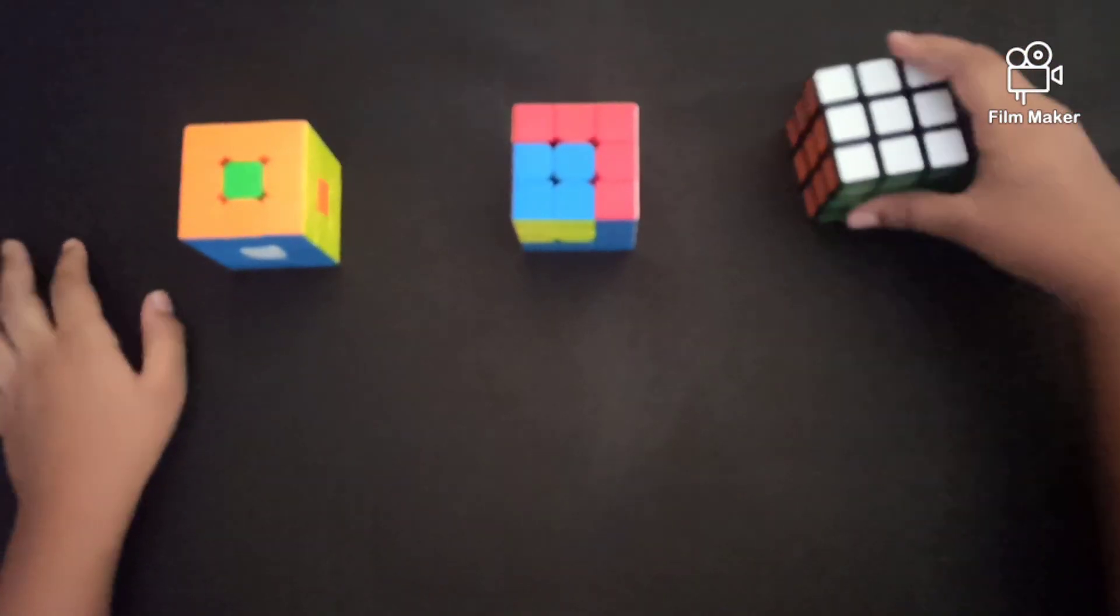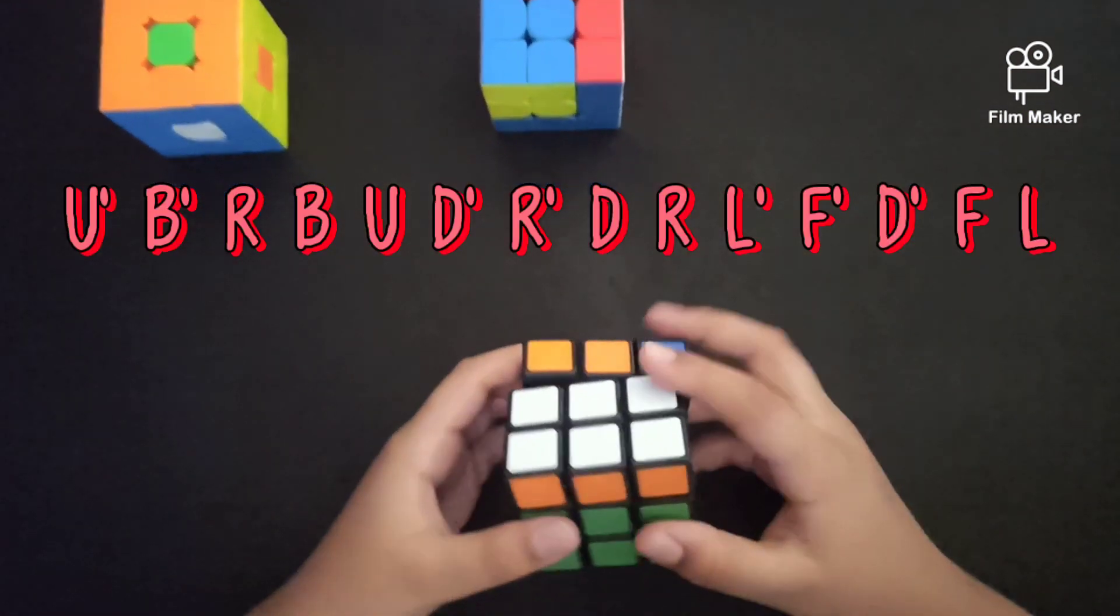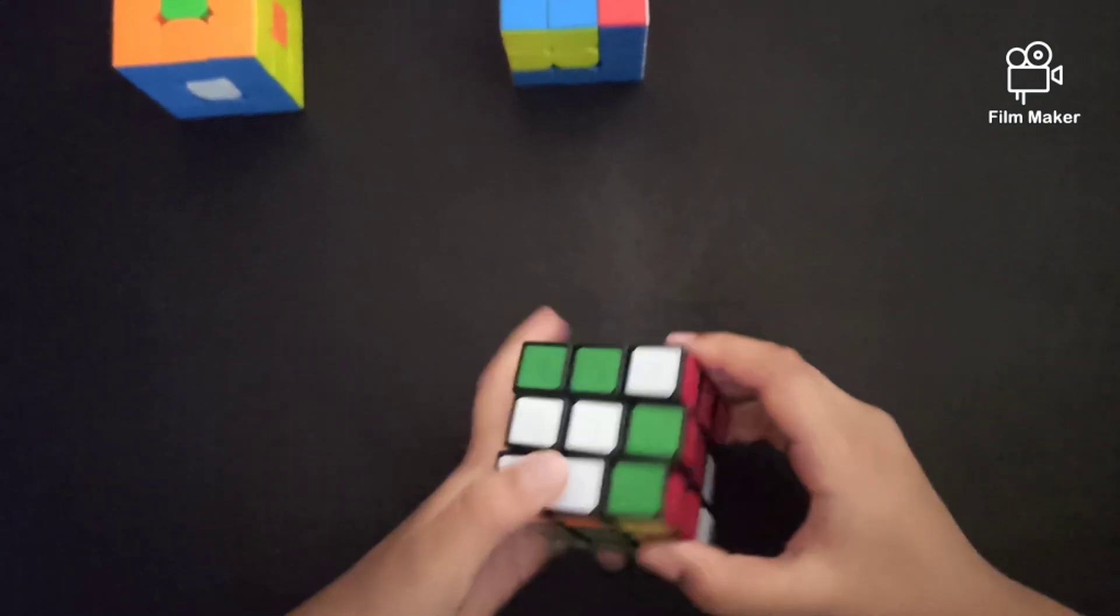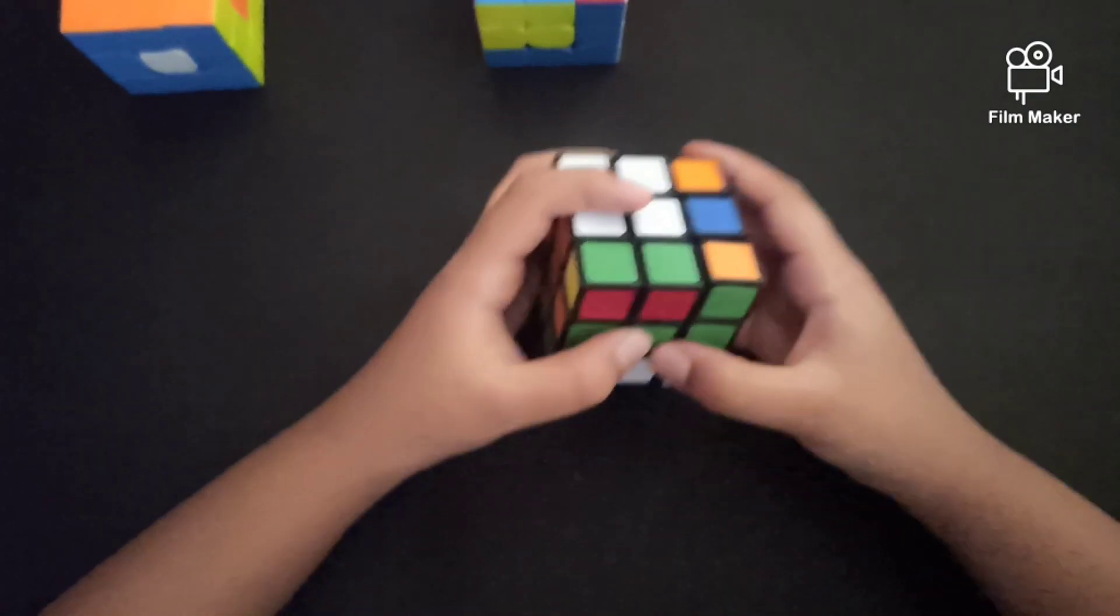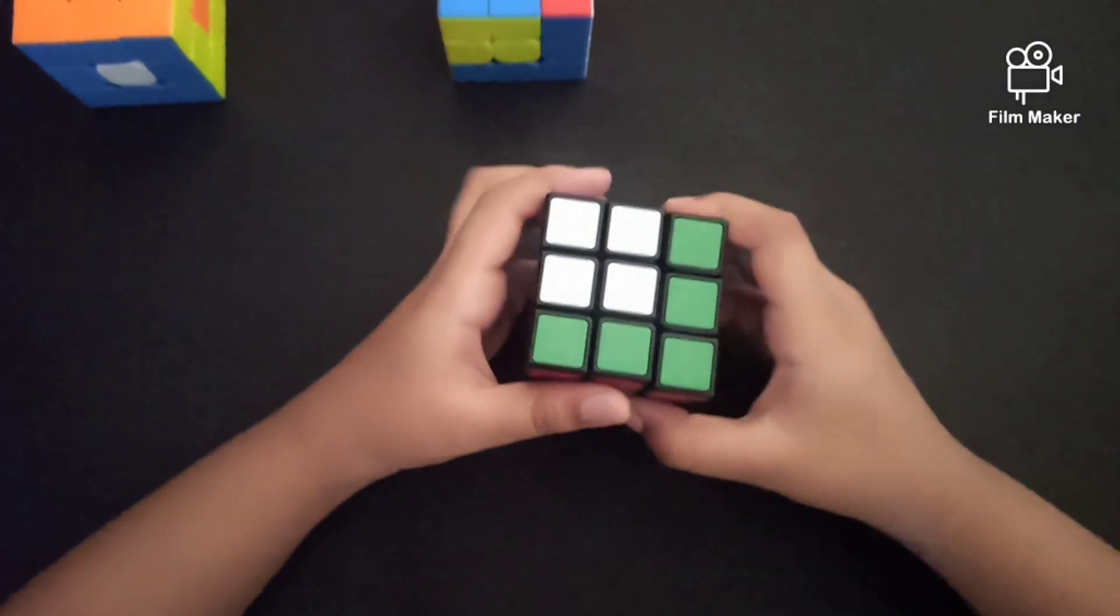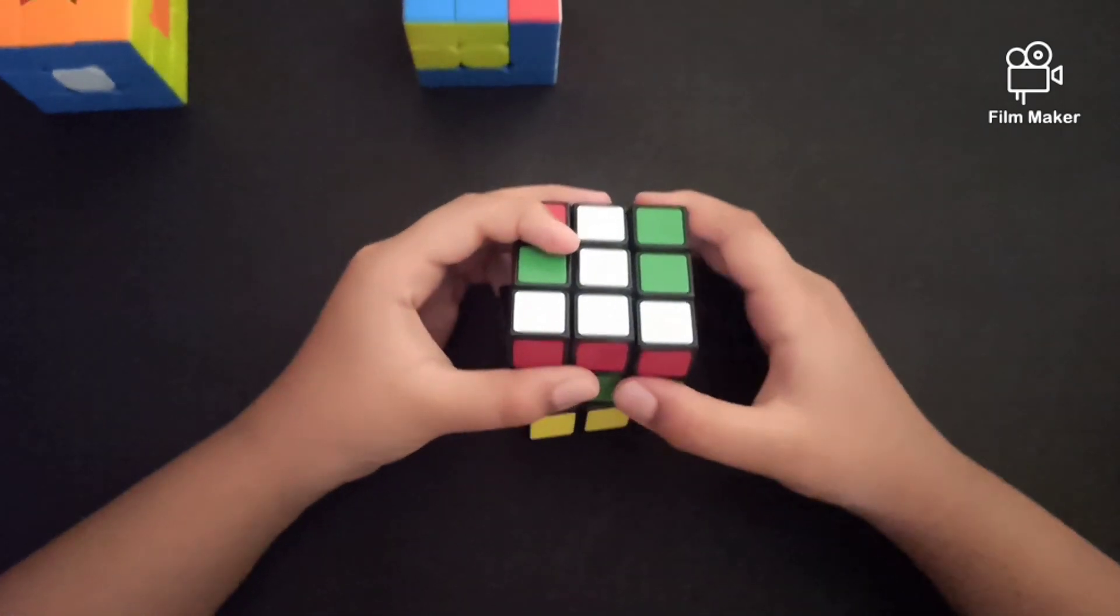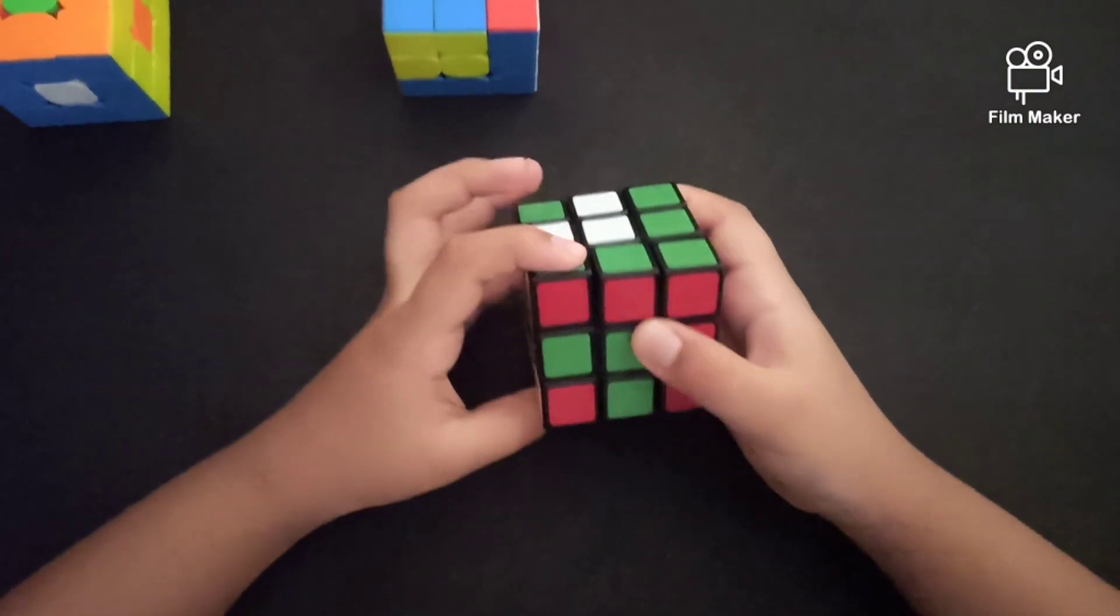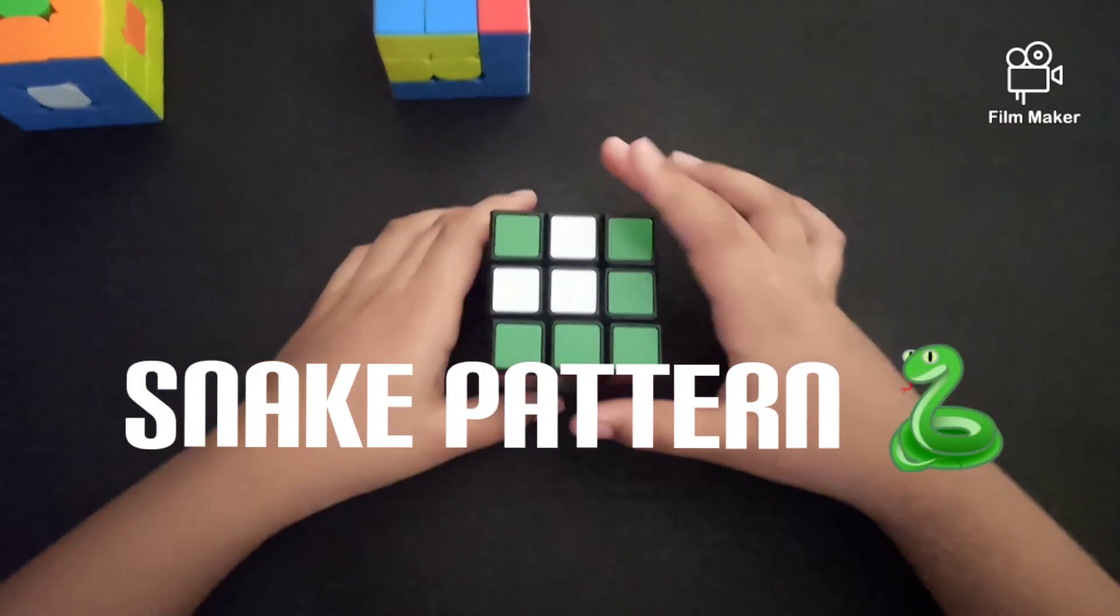Let's see the third pattern. U' B' R B U D' R' D R L' F' D' F F L. This is snake and cube. Look at it.